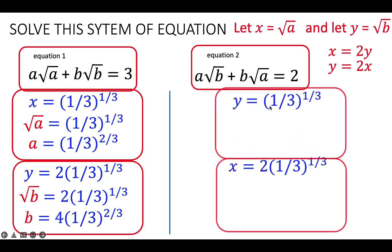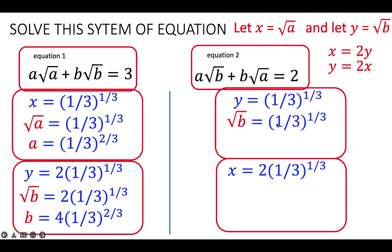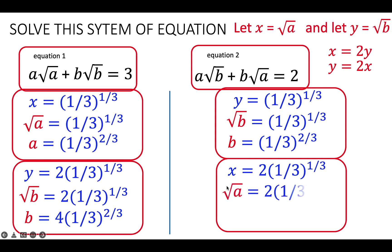From here we solve for A and B. Since Y equals the square root of B, squaring both sides gives B equals (1/3) raised to 2/3. Since X equals the square root of A, squaring both sides: A equals 2 squared times (1/3 to the 1/3) squared, which equals 4 times (1/3) raised to 2/3. These are the values for A and B based on case 2.